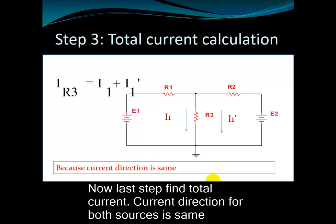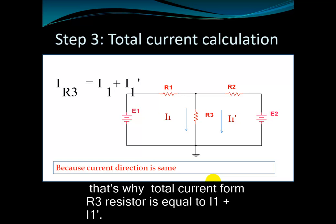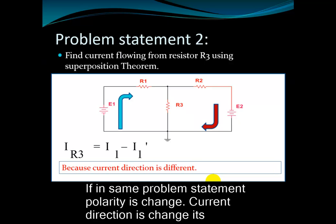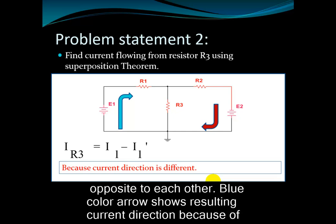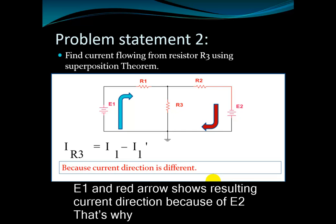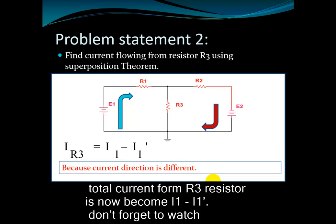Now the last step: find the total current. If the current direction for both sources is the same, the total current through R3 is equal to I1 plus I1'. If the same problem has a changed polarity as shown in the figure, the current direction changes — they are opposite to each other. The blue color arrow shows the resulting current direction due to E1, and the red arrow shows the resulting current direction due to E2. That's why the total current through R3 is now I1 minus I1'.